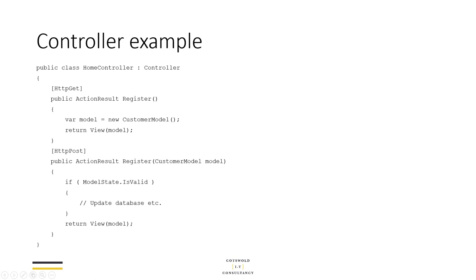For a GET action, you'll generally create a new model, populating it from database if the method takes an ID. For a POST action, it generally takes a model with all the data the end user typed in. You then check if validation is correct — if it is, you might update the database and redirect; if not, you send the same view back with the same model so the user sees the validation errors. That's the general pattern of actions in the controller.